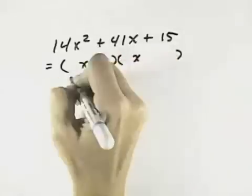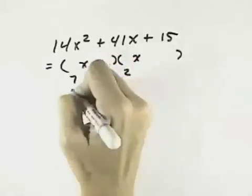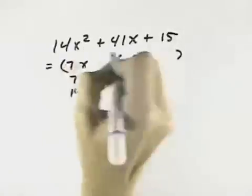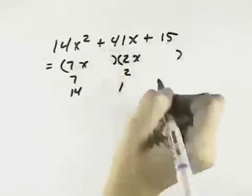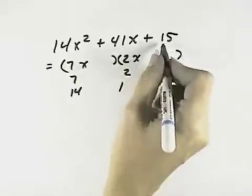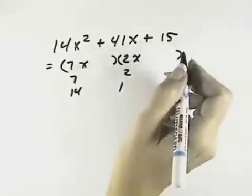We know there has to be an x in the first term, and then we have choices of 7 and 2 or 14 and 1. I'll start with the 7 and 2 and try that with all the combinations of the factors of 15. If none of them work, then we'll try the 14 with the 1.